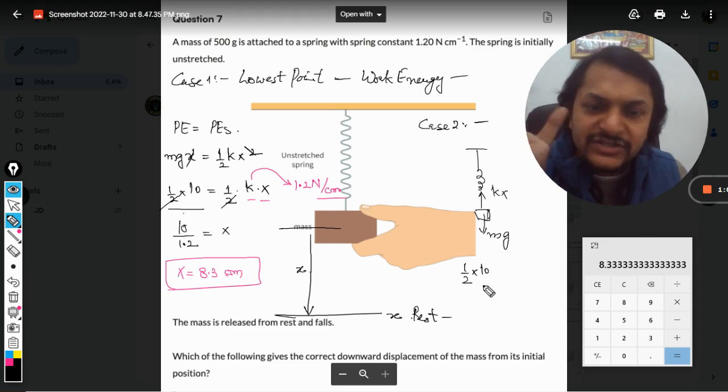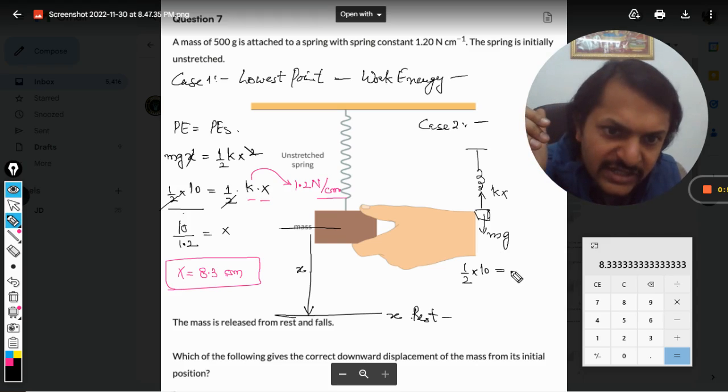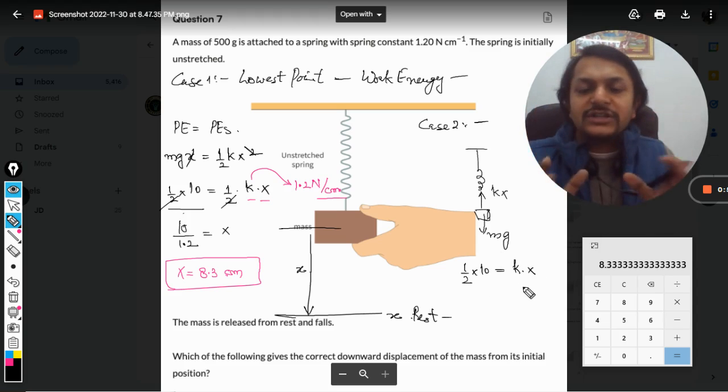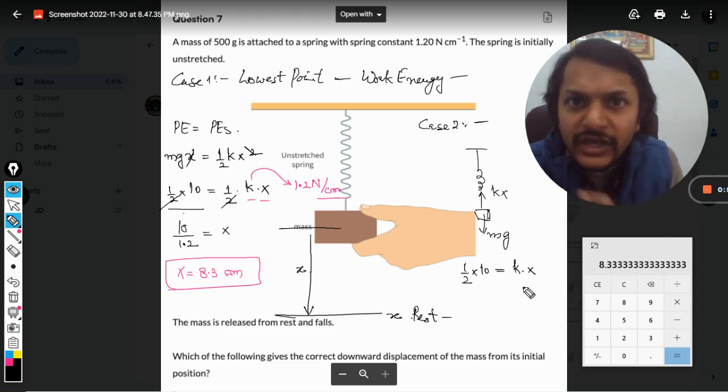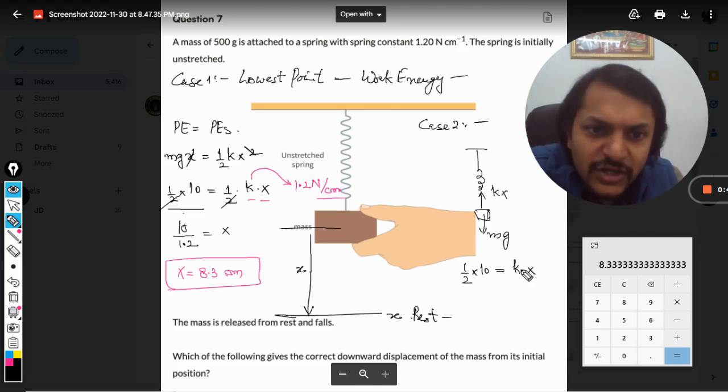So half into g is mg, because mass is 500 grams, that is half kg. This will be equal to k into x. Again, I am not changing the units for k, I am just keeping it in centimeters so that I would be getting the answer in centimeters itself. So we just divide by k, so it will be 5 divided by 1.2.